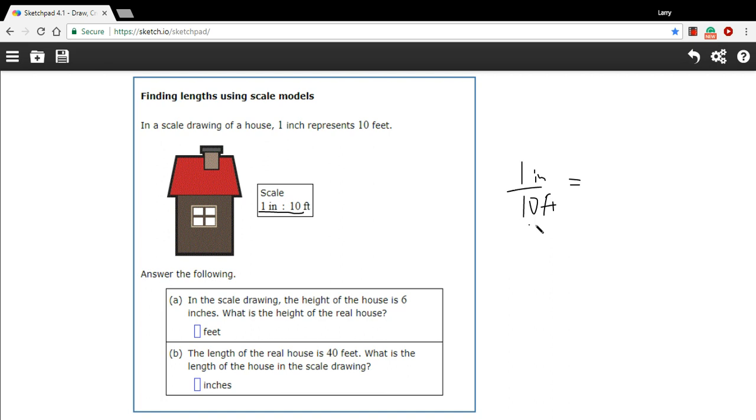We'll use our ratio of the scale model here. And then we'll set up a ratio with things in the same order. So inches on top, feet on the bottom. In this case, 6 inches is the height of the scale model. And we don't know how many feet is the height in the real world.